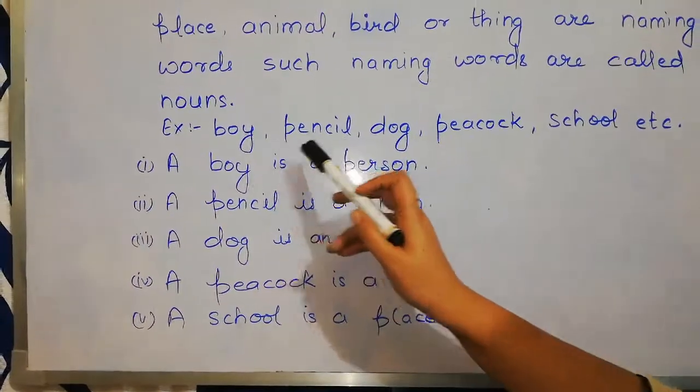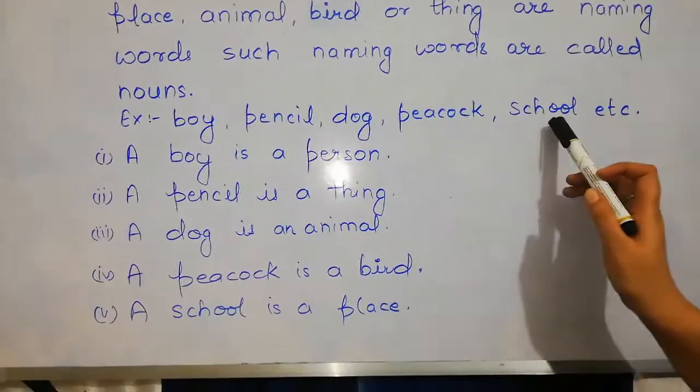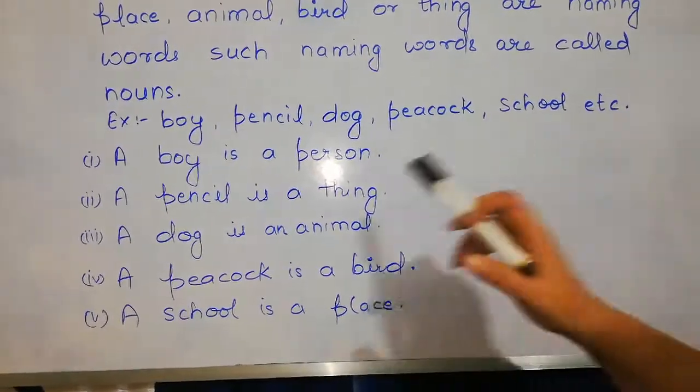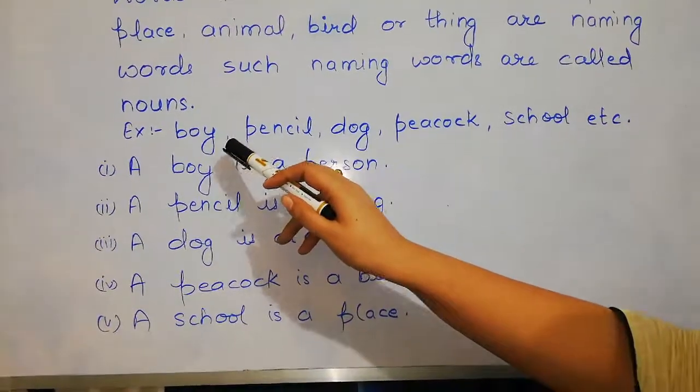Let's see some examples: boy, pencil, dog, peacock, school, etc. Boy is a person's name, pencil is a thing, dog is an animal, peacock is a bird, and school is a place.